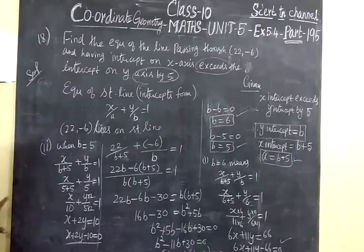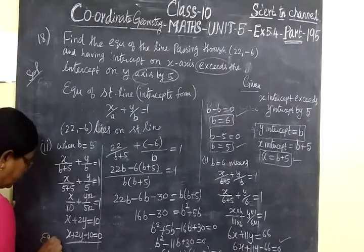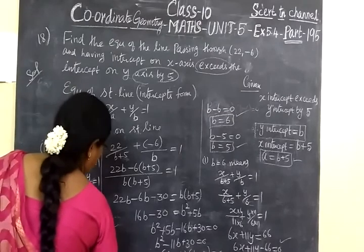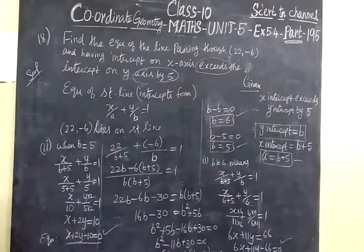This is the equation of the other line: x plus 2y minus 10 equals 0. This is correct. In the next few classes, we see part 196 and 197. Thank you.